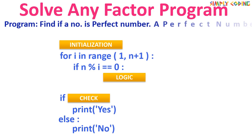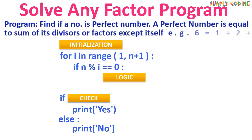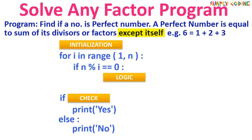Let's do another program — perfect number. A perfect number is a number which is equal to the sum of its factors excluding itself. For example, 6 equals 1 plus 2 plus 3, which are its factors. An important thing to note is that we ignore the number itself as a factor, so we make a slight change in the template: we change the stop value of range to n instead of n plus 1.